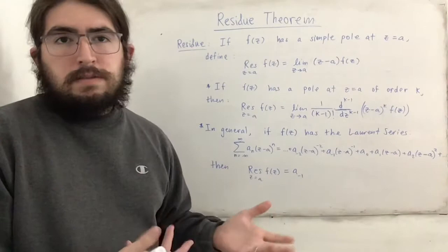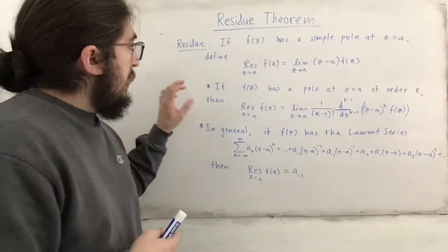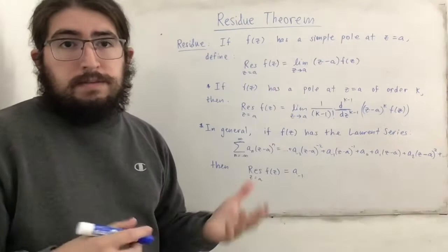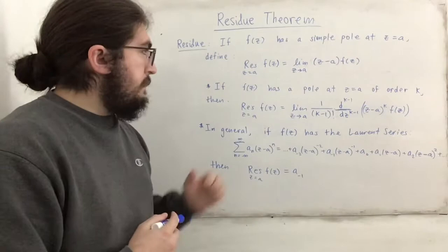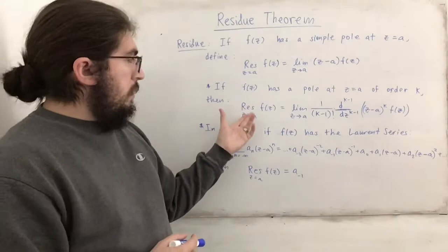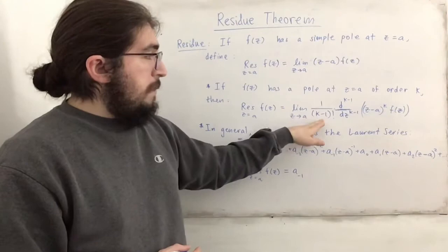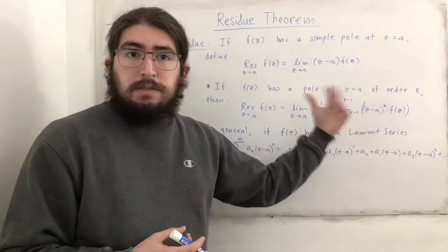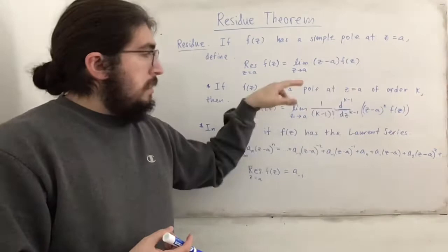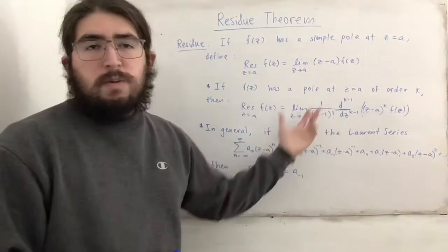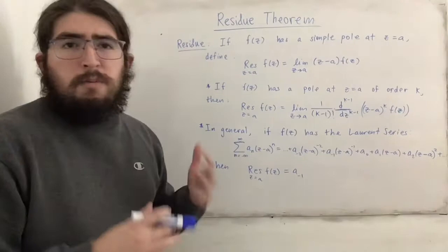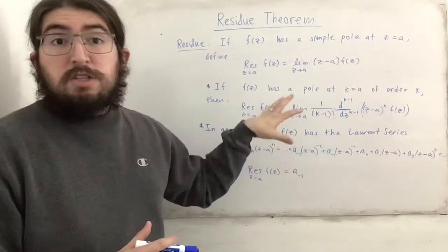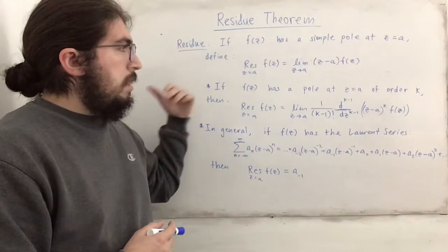Now we generalize this. If f of z has a pole at z equals a of order k — so not a simple pole, like having z minus a to the third power in the denominator — then the residue at z equals a of f of z is the limit as z approaches a of 1 over (k minus 1) factorial times the (k minus 1)th derivative of z minus a to the k times f of z. The idea is you multiply by however many z minus a's you need to cancel them completely in the denominator, take the (k minus 1)th derivative, divide by (k minus 1) factorial, and take the limit. This connects to Cauchy's integral formula and its generalization when f of z has a pole of order k.